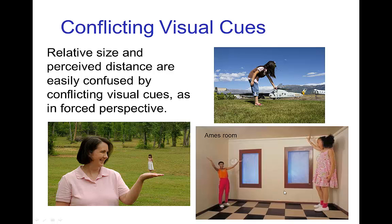A famous example is the Ames room, where the floor is tilted, the ceiling is tilted, and the tiles are distorted in shape. But when we look at it, because we are so used to using perspective to establish size, it looks as if the child is huge and the mother is tiny.